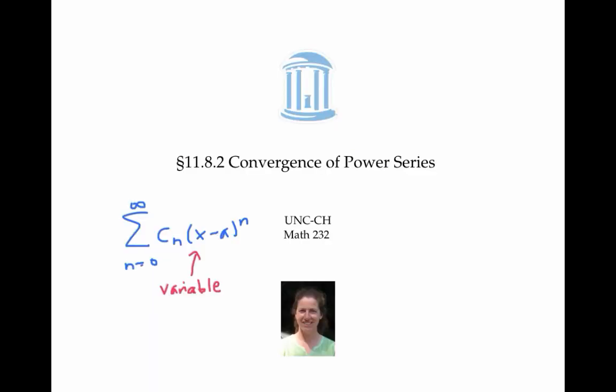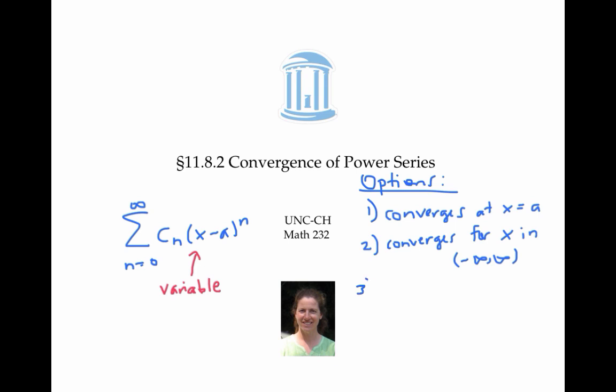In this video, I worked out some examples using the ratio test to figure out what x values make a power series converge. I also stated the fact that there are only three options for convergence of a power series: convergence at the center only, convergence for all real numbers, and convergence on some finite interval centered at the center of the power series.